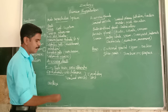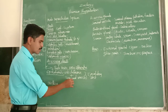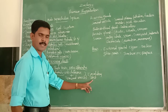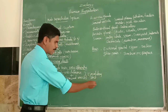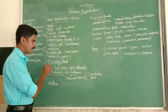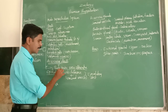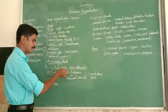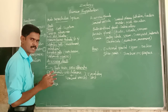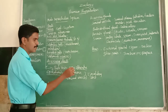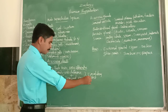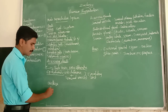From the epididymis, the sperm moves to the vas deferens, which is connected to the seminal vesicles. The vas deferens and seminal vesicles together form a common ejaculatory duct. This ejaculatory duct moves through the urethra and the sperm comes outside. From the ejaculatory duct, the sperm moves to the urethra and then exits.